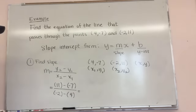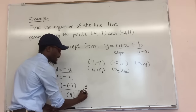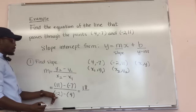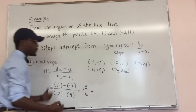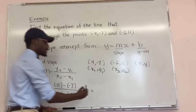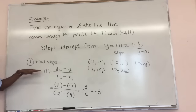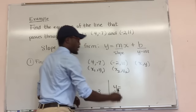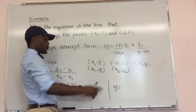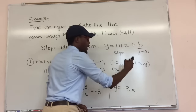Substituting in, 11 minus -7 is positive 18. Negative two minus four is negative six. Eighteen divided by negative six gives us negative three. So now we've found our slope, and our equation now looks like Y = -3X + B.